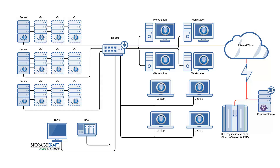There's also a component labeled the BDR device in the diagram. It can be anything — a virtual machine, a spare workstation, or a server. Its main purpose is to run an instance of the ImageManager software on a permanent basis, because ImageManager is responsible for the verification of backup images using the MD5 hash file, as well as the consolidation and retention of your backup images.